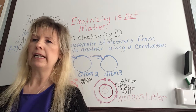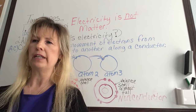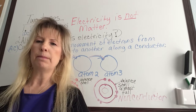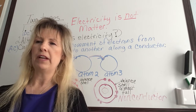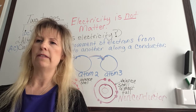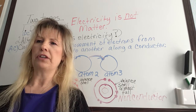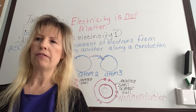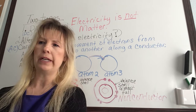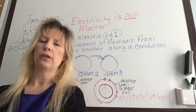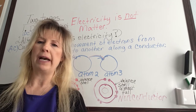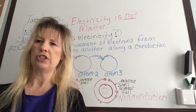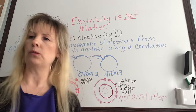A complete electric circuit is the path that the negative and the positive electric currents take from the generating source through the conductors and back to the generating source.